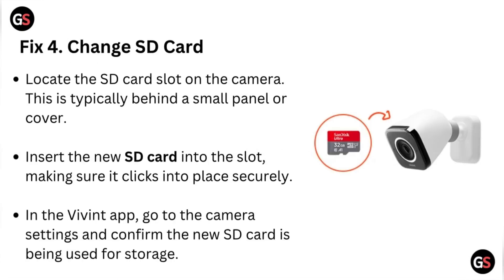Fix four: replace the SD card. Locate the SD card slot on the camera — this is typically behind a small panel or cover. Insert a new SD card into the slot, making sure it clicks into place securely. In the event app, go to the camera settings and confirm the new SD card is being used for storage.